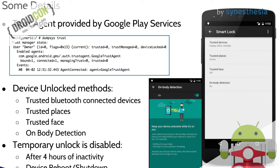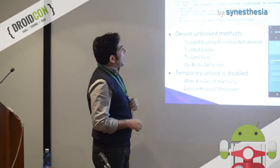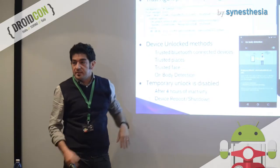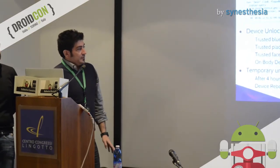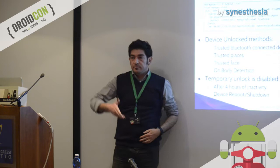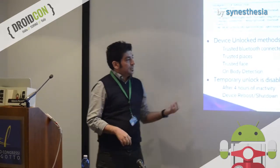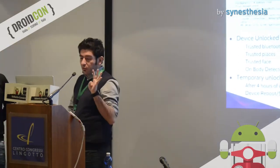The Smart Lock is the Trust Agent provided by Google Play Services. We hope that in the future there will be public APIs that let you develop your own Trust Agent, because looking at the source code, the structure seems really designed to be a public API. With a system command you can find out which Trust Agent is running on the device. Currently, we have only the Smart Lock, which provides: trusted Bluetooth, trusted places (home, work), trusted face (the old face unlock), and body detection — the lock screen is disabled when you use your device. The temporary unlock is disabled after four hours of inactivity and when the device is rebooted.